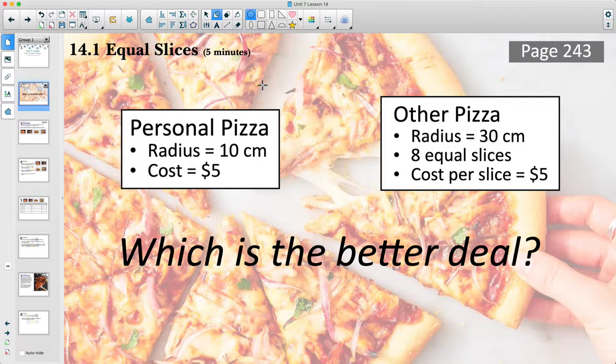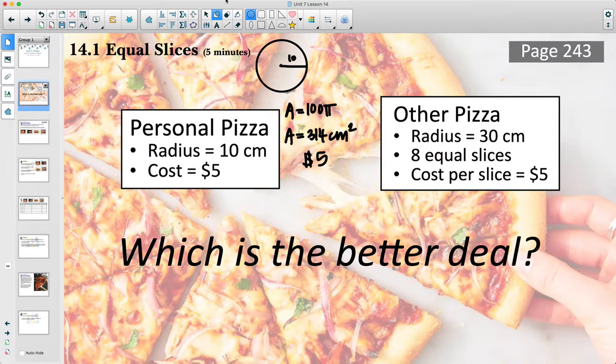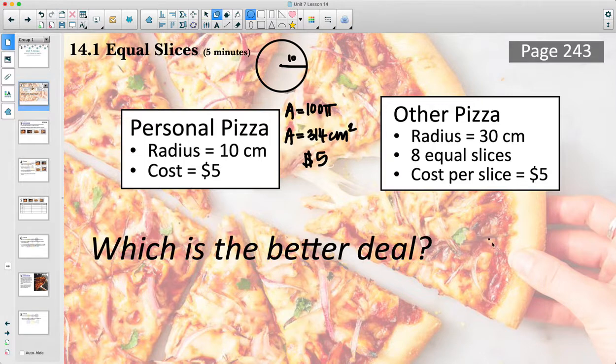All right, so for this first pizza, you're getting the whole pizza here for $5 and they're giving you a radius of 10. So if we looked at the area, since it's what we're eating, the area of this pizza, we're getting 100π centimeters squared, which is approximately 314 centimeters squared for $5. And so let's take a look at this other pizza. Now we know this pizza is actually much larger, but they're dividing it into eight slices.